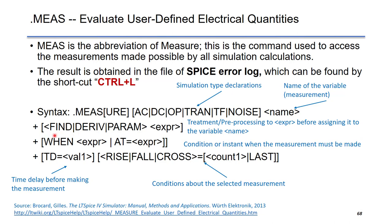The second line is the treatment or preprocessing to your expression before assigning it to the variable name. The third line is the condition or incident when the measurement must be made. The last one shows the delay time before making the measurement and also the conditions about the selected measurement. Please go to this reference for further information.